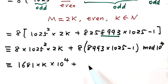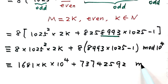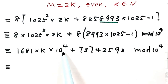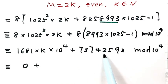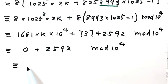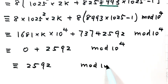Simplifying this part gives 7,374 and 2,592 mod 10 to the power of 4. Divided by 10 to the power of 4, you can see this part has a factor of 10 to the power of 4, so the remainder is 0. That part vanishes, and the last four digits come from the remaining term: 2,592 mod 10 to the power of 4. So the remainder is 2,592.